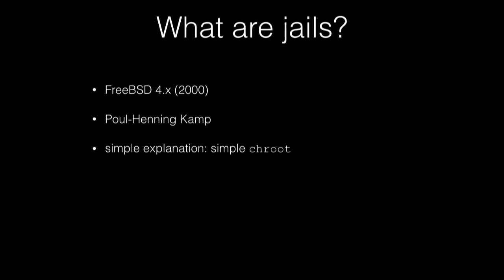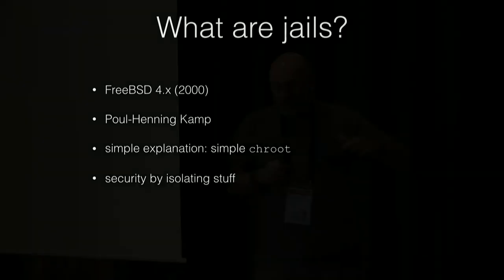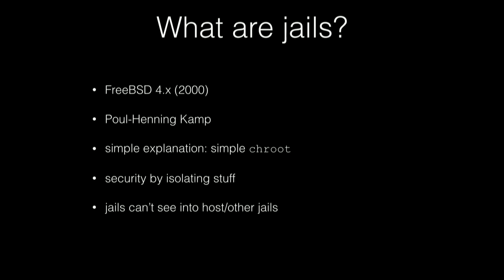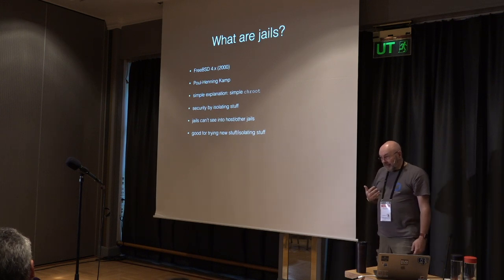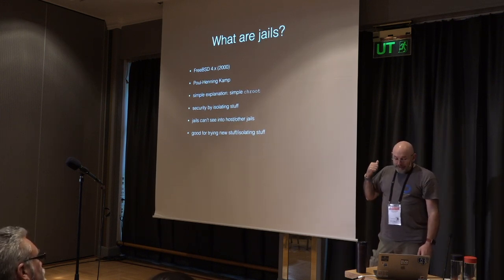The simple explanation is that jails are just a chroot, and I like to use them to keep things apart from each other. I like to have my web server in one jail, my database server in another jail, and my commit processing in another jail, so I can separate and upgrade them independently without worrying that installing something broke something else. Jails can't see into other jails — if you're in a jail, you can't see what's in the jail above, below, or beside you. You can look at your own child jails, but not sibling jails running at the same level.